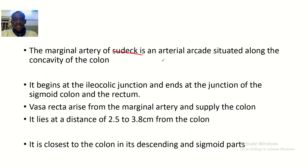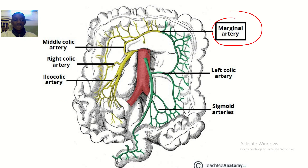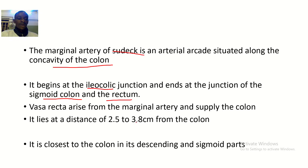The Marginal Artery of Sudeck is an arterial arcade — spread out like a series of arteries — situated along the concavity of the colon. It begins at the ileocolic junction and ends at the junction of the sigmoid colon and the rectum. The vasa recta arise from the marginal artery and supply the colon. It lies at a distance of 2.5 to 3.8 cm from the colon, and it is closest to the colon in its descending and sigmoid parts.